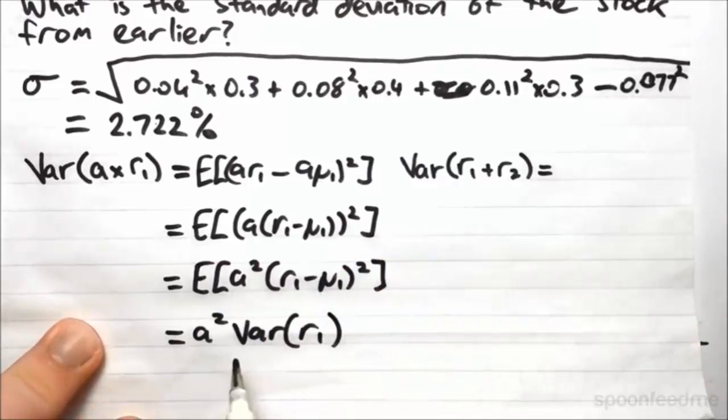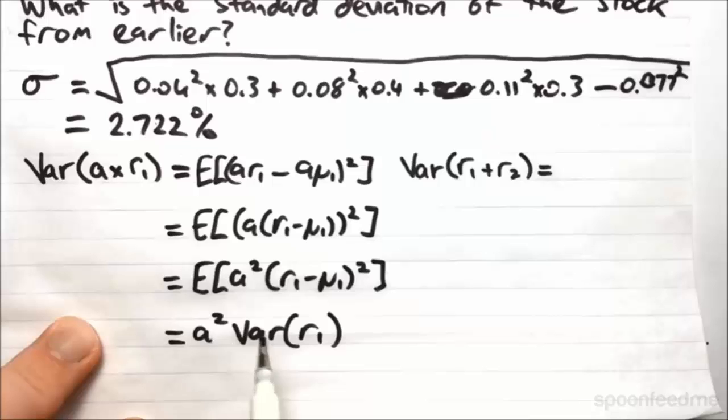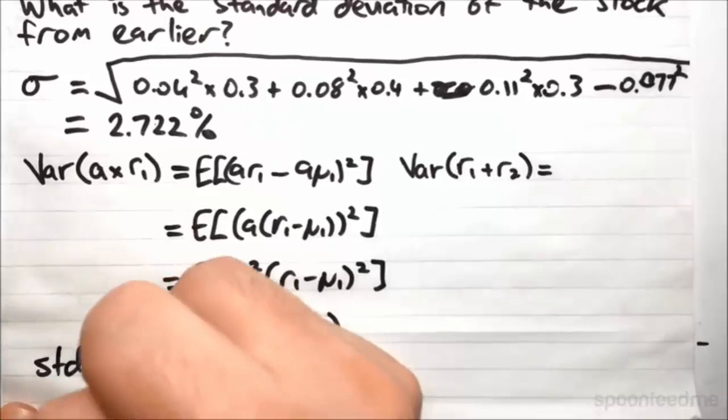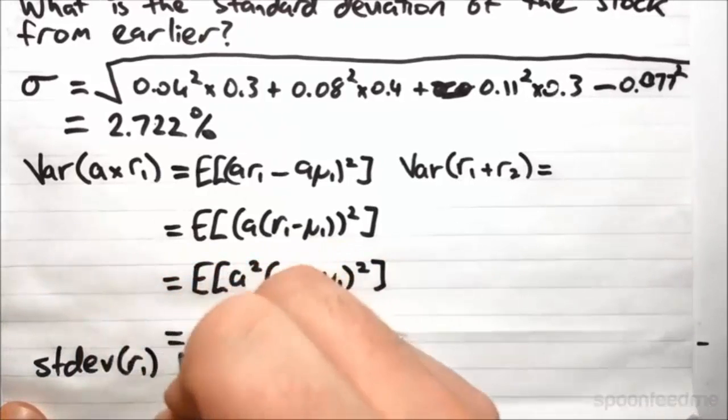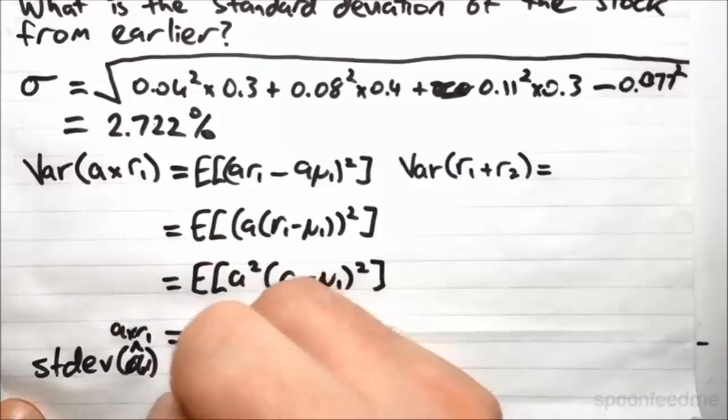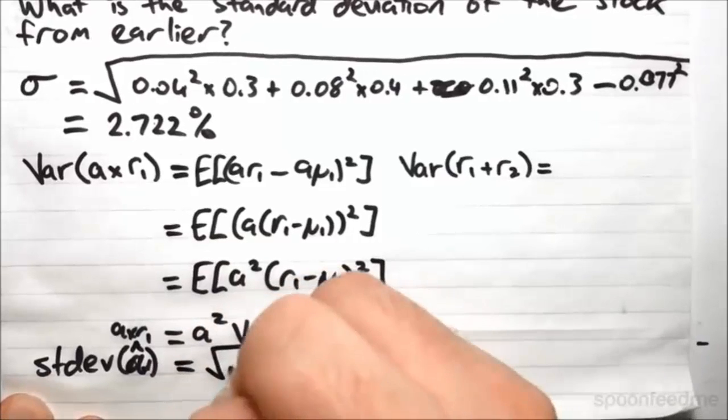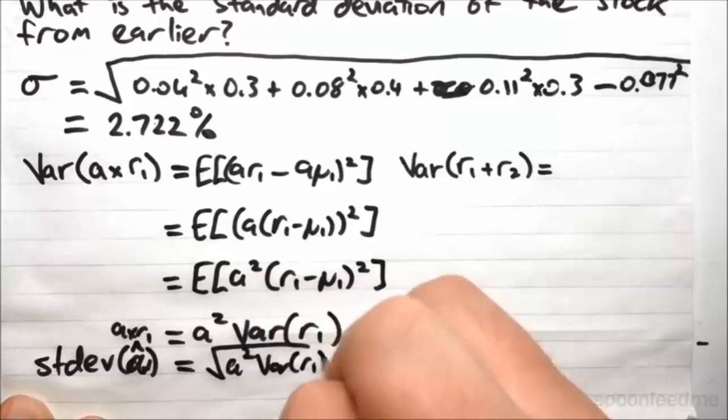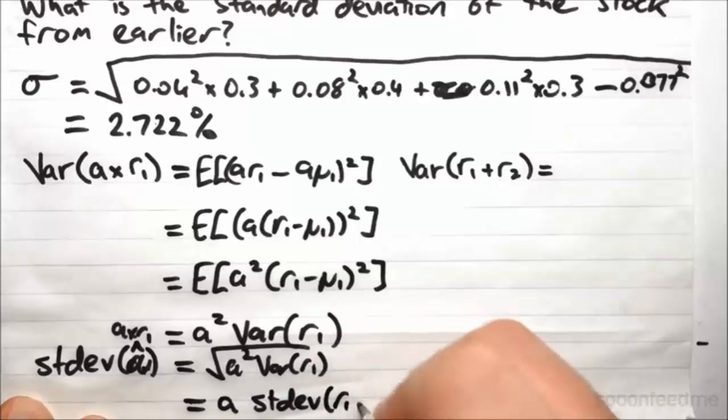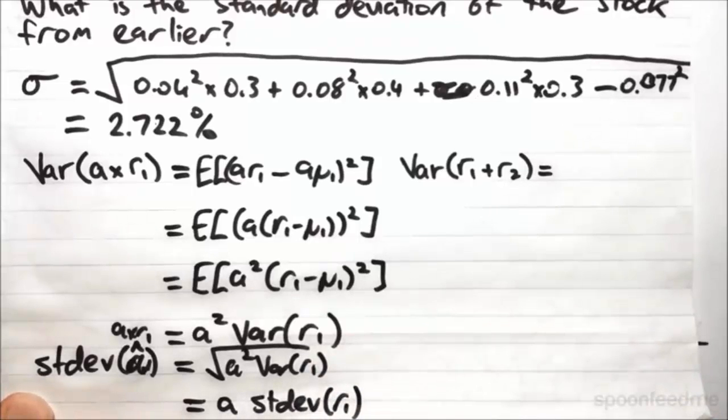And herein lies why we prefer to use the standard deviation to the variance, because we can see that this doesn't really scale linearly. If you have 10 times the variance will be 100 times the variance of 1, which doesn't make a lot of sense. But if we take the standard deviation, that will be equal to the square root of A squared times the variance of R1, which will be A times the standard deviation of R1. This makes a lot more sense, so this is why we prefer to use it.